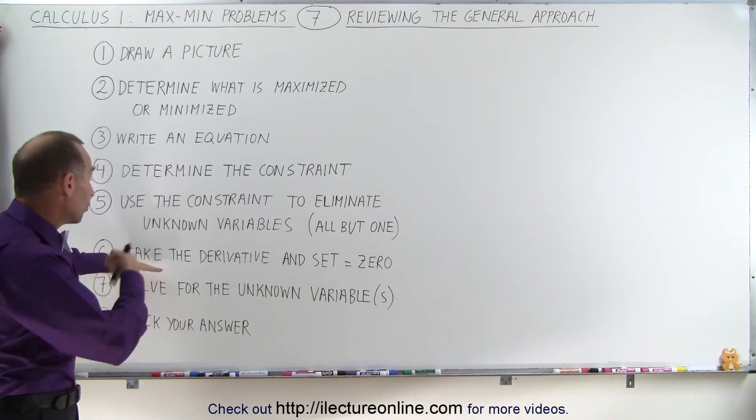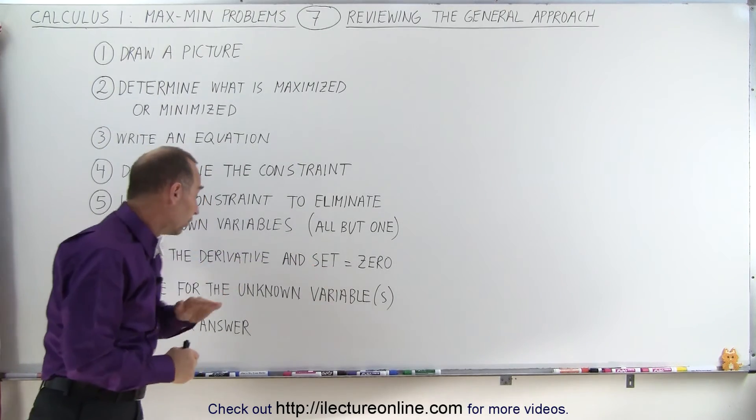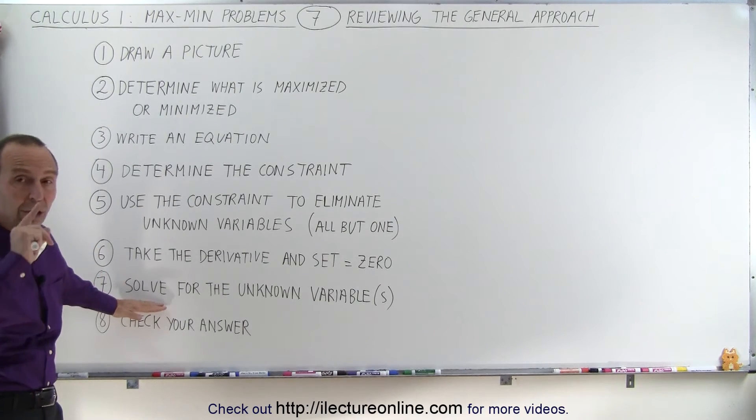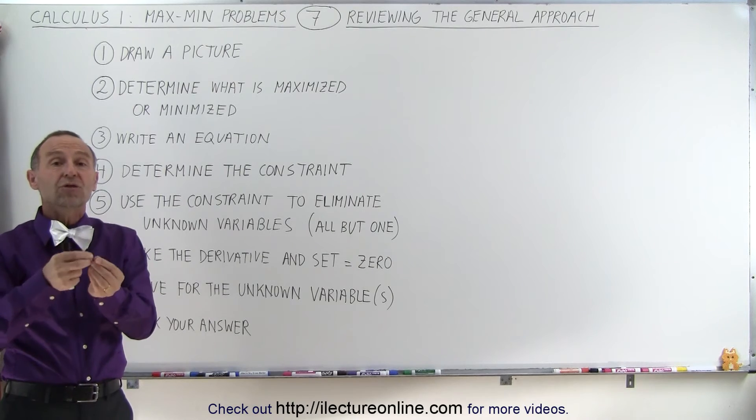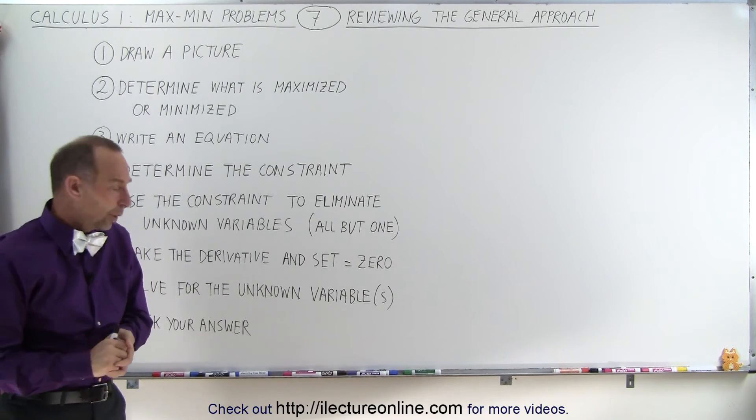So what you do is you take the derivative, you set it equal to zero, and then you solve for that one unknown variable that's left in the equation. Once you have that variable, you can then use that to find the other variables as well.